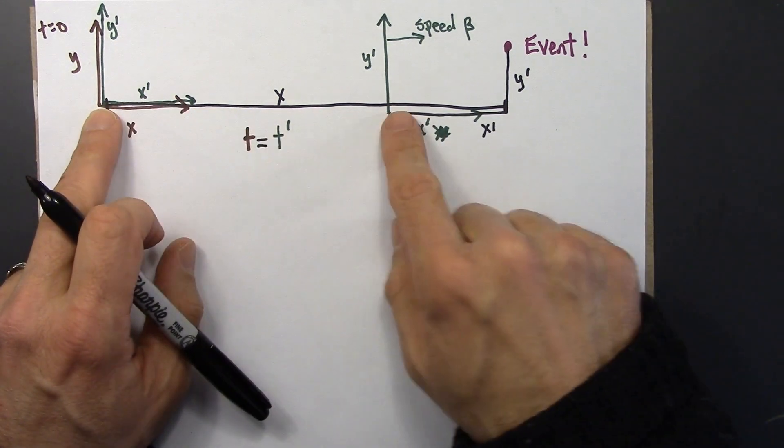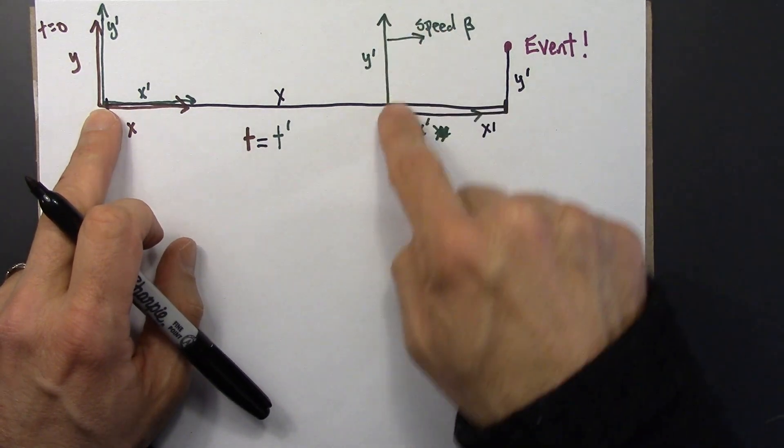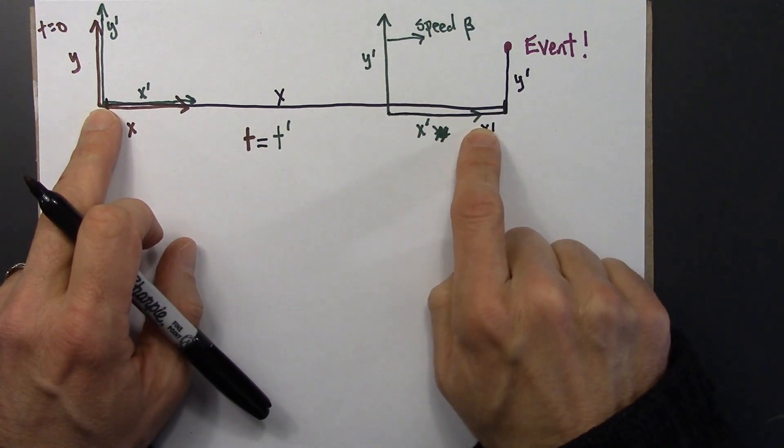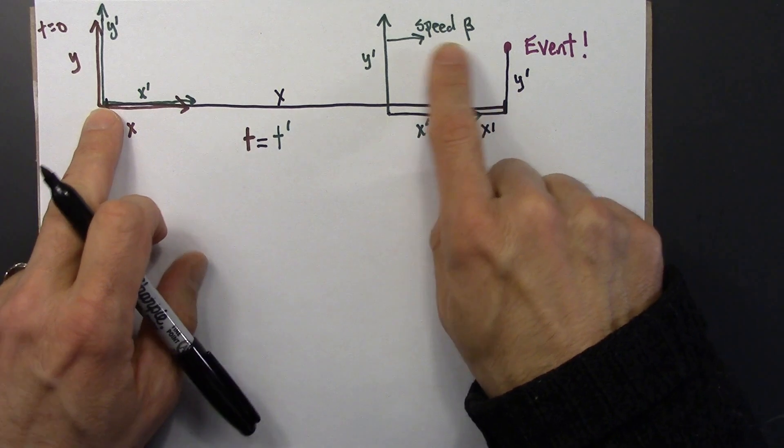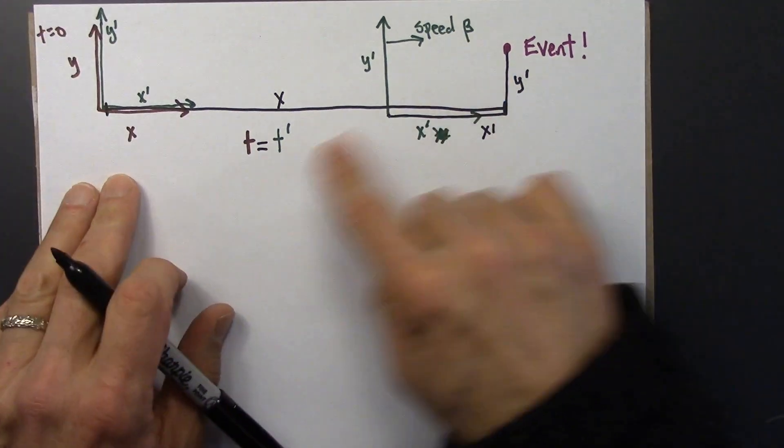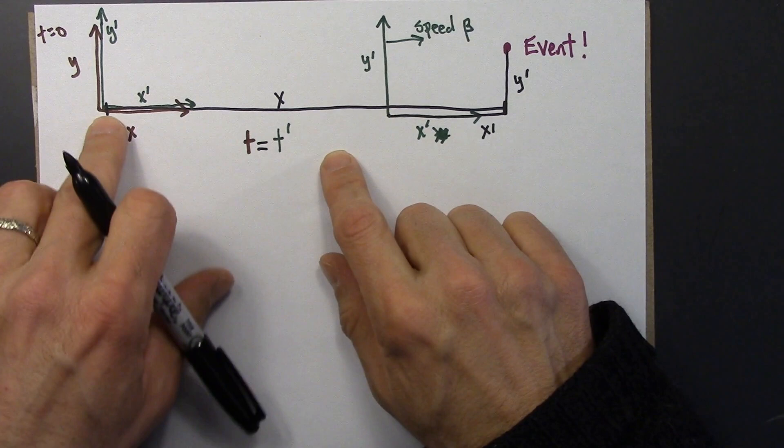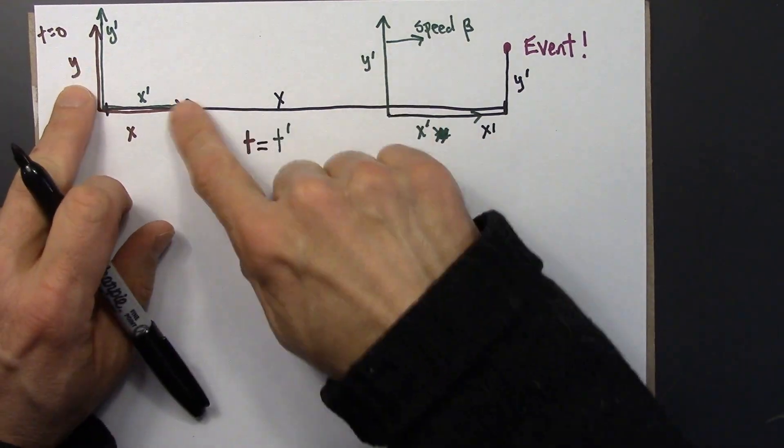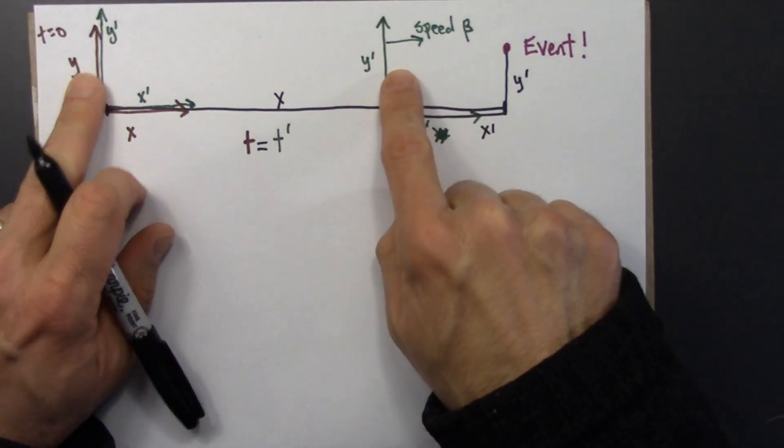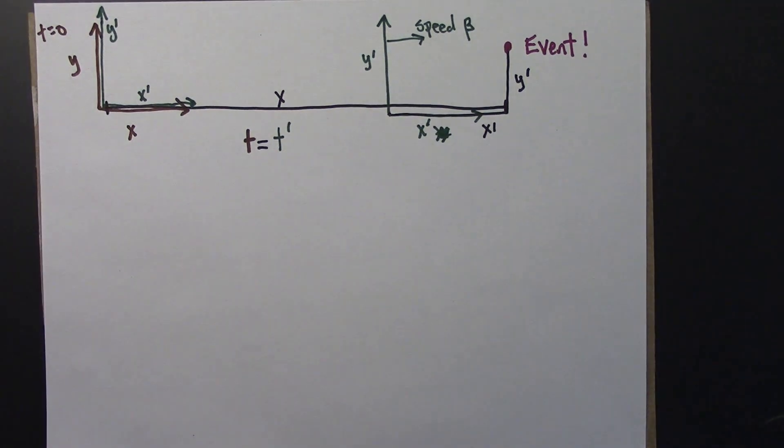So the reason there's a difference here is because this axis is moving at speed beta. So if I know the speed beta, and I know the time at which it occurs, I know how far this green reference frame has traveled. So distance equals rate times time.